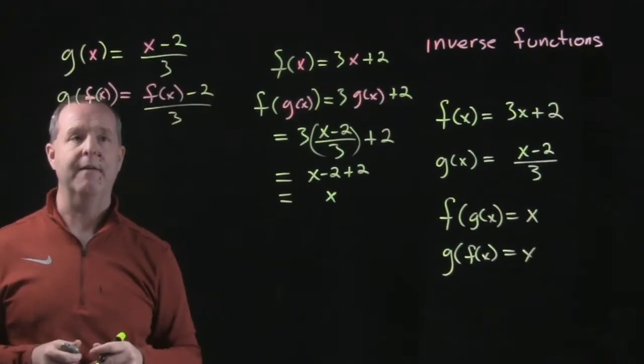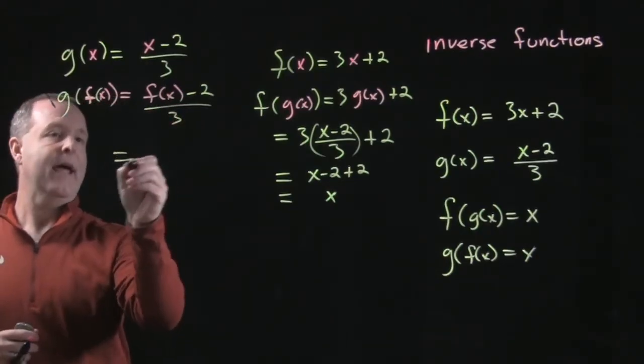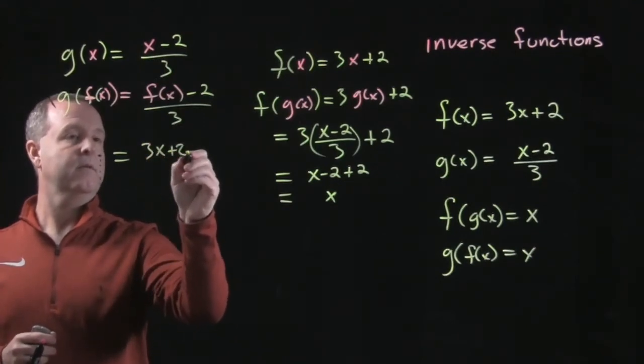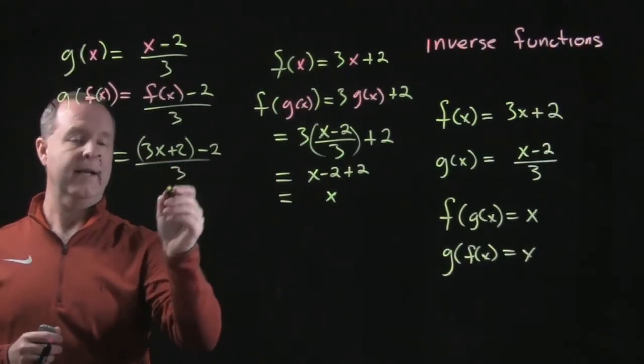All I was doing was substituting f of x into the equation. Working that down, f of x is 3x plus 2 minus 2 all over 3.